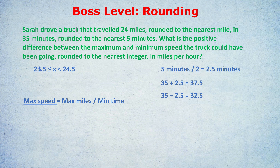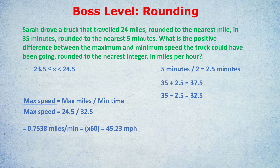Speed is distance divided by time. For max speed, we use the maximum number of miles divided by the minimum amount of time — that maxes out our speed, since dividing by a small number maximizes the fraction. The max miles is 24.5 and the minimum time is 32.5. This gives miles per minute, so after getting 0.7538, we multiply by 60 to convert to miles per hour. So 45.23 miles per hour is the maximum speed she could have been going.